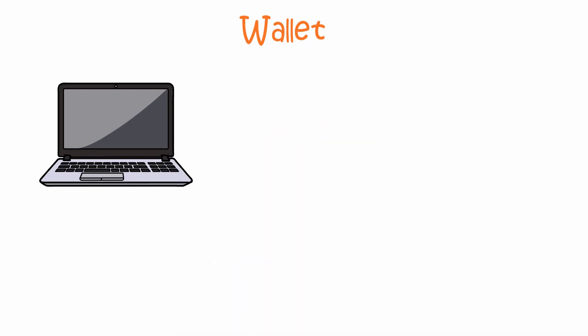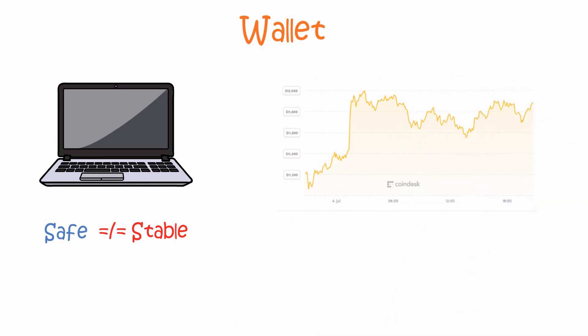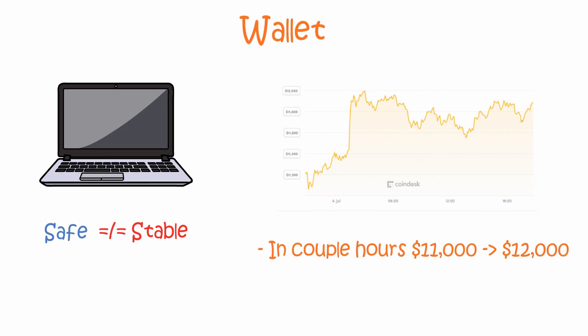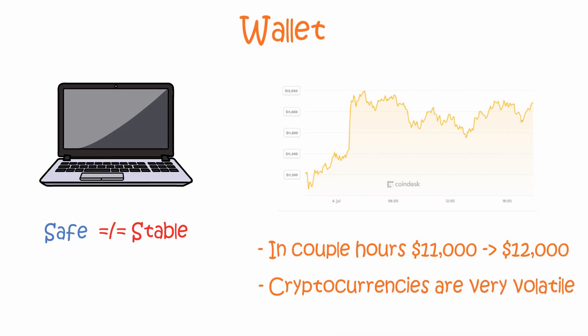This means that your cryptocurrencies won't be pickpocketed while you walk in the street, only if you lose your computer. Even though cryptocurrencies are very safe, this doesn't mean that they are stable. The price changes all the time, as you can see in this chart. In a couple of hours, the price of bitcoin went from 11,000 dollars to 12,000 dollars. This means that bitcoin and other cryptocurrencies are very volatile, but more about the price later in this video. Let's first move on to the history of bitcoin.